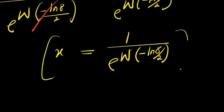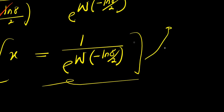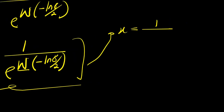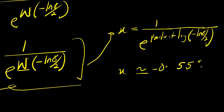So this is our answer. To get the numerical value in your calculator, type in 1 divided by e to the power of the Lambert W function — you may see it listed as the product log — of negative natural log of 8 divided by 2. Product log is another name for the Lambert W function. This gives an approximate value for x of approximately 0.559.